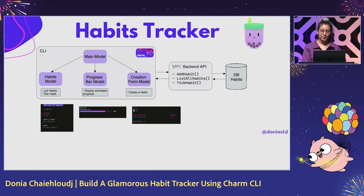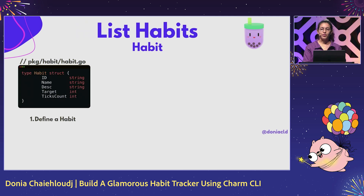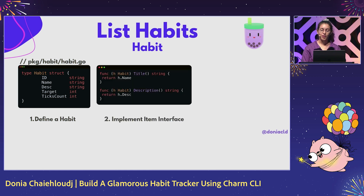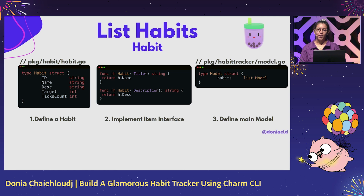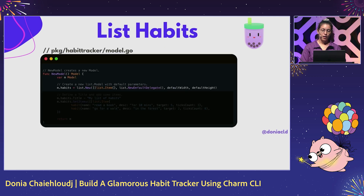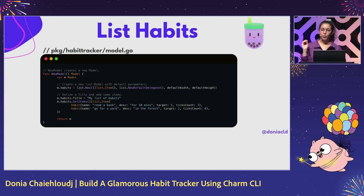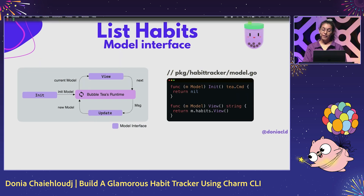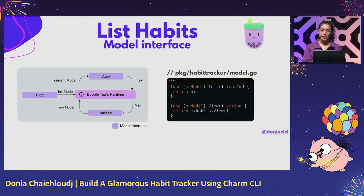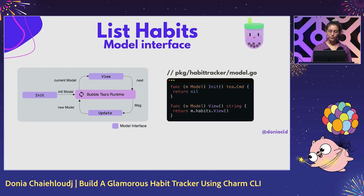We define a habit with some information — we have our data model. I'm implementing an item interface available in Bubble Tea to display the title and description. In the main model I add the list of habits. To initialize the model I use list.New with all the default setup and customize it with a title and some hardcoded items for the sake of the demo. We have the model interface with the init methods — we're not launching anything at the beginning — and we have the view, where we use m.habits.View, the method available in Bubble Tea, delegating all the rendering work to the library.